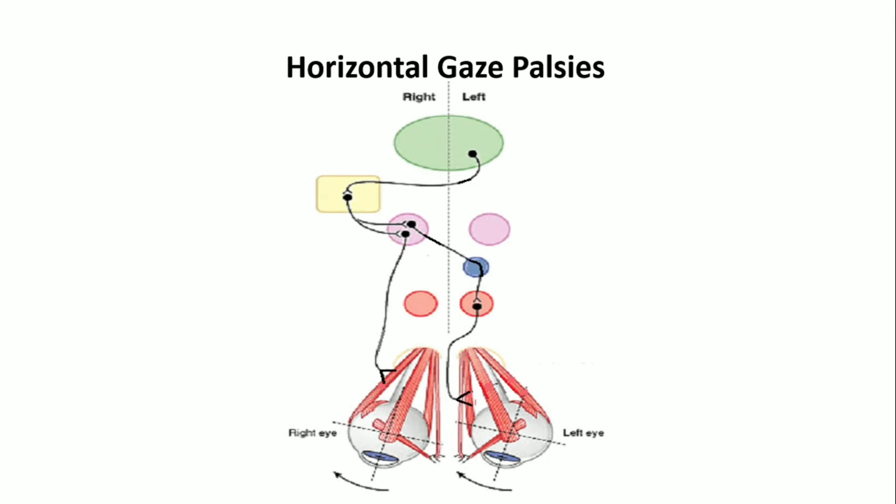Horizontal gaze palsies depend on the site of lesion. Due to right abducent nerve lesion, the right eye cannot look to the right. If there is a lesion to the right PPRF, neither eye can look to the right.